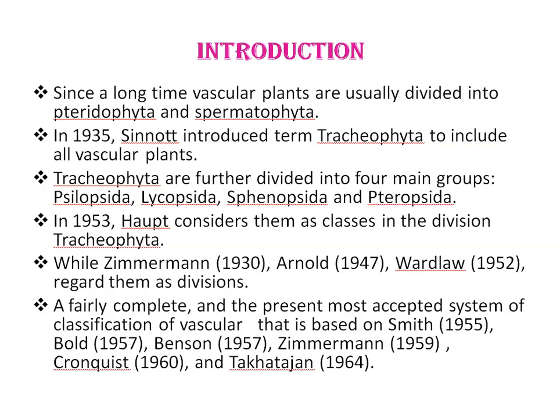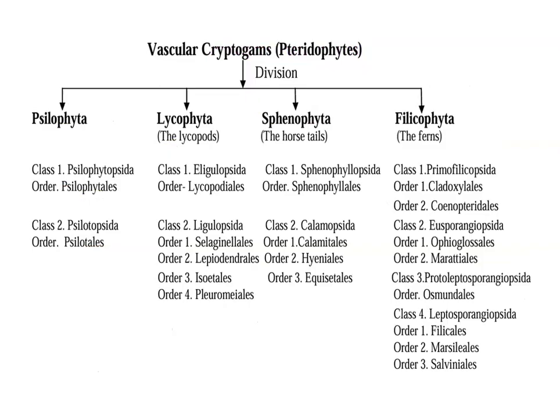A fairly complete and presently most accepted system of classification of vascular plants was developed, based on Smith, Bold, Benson, Zimmerman, Cronquist, and Takhtajan. According to this classification, Pteridophytes are divided into four divisions: Psilophyta, Lycophyta, Sphenophyta, and Filicophyta.